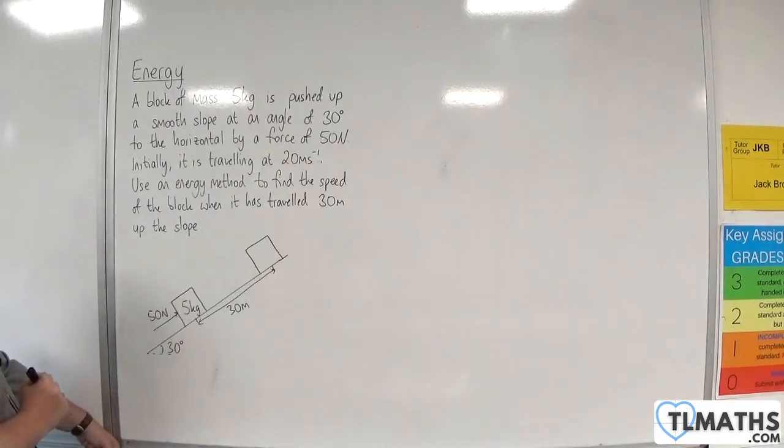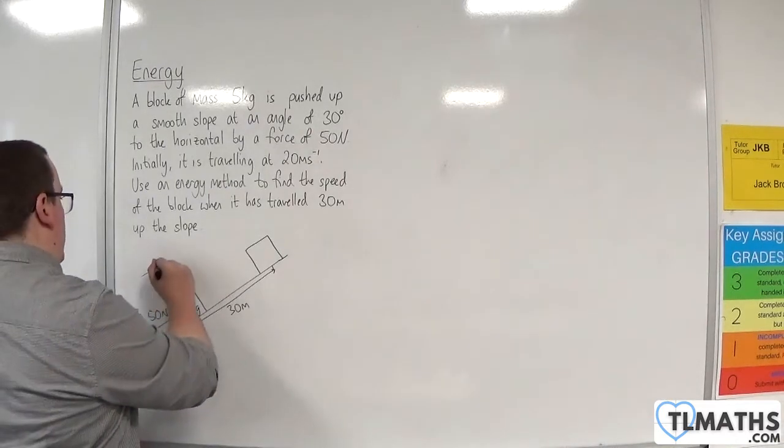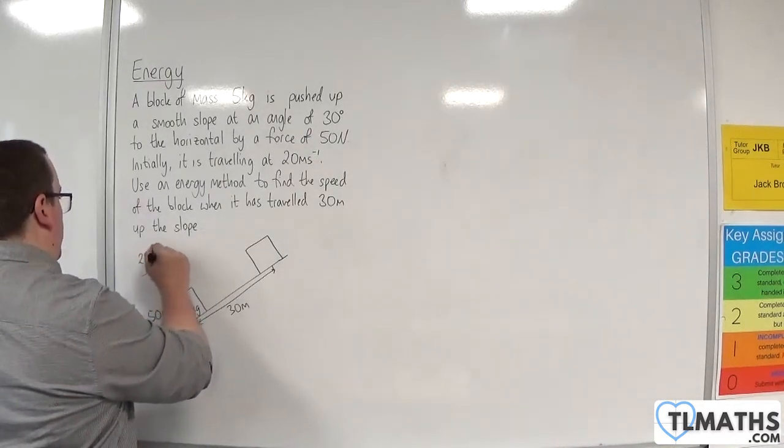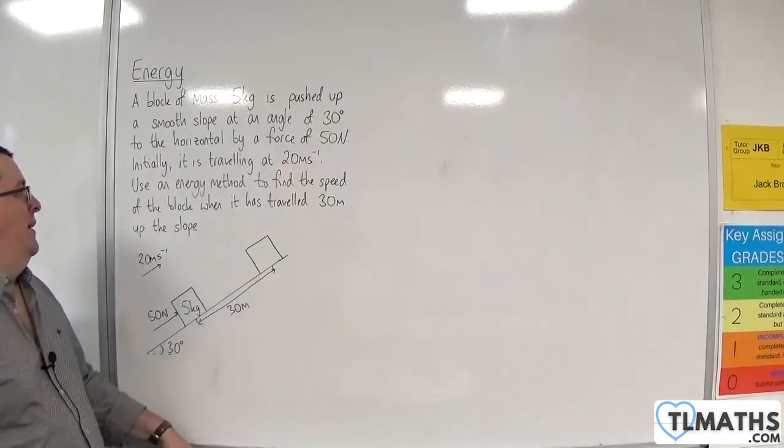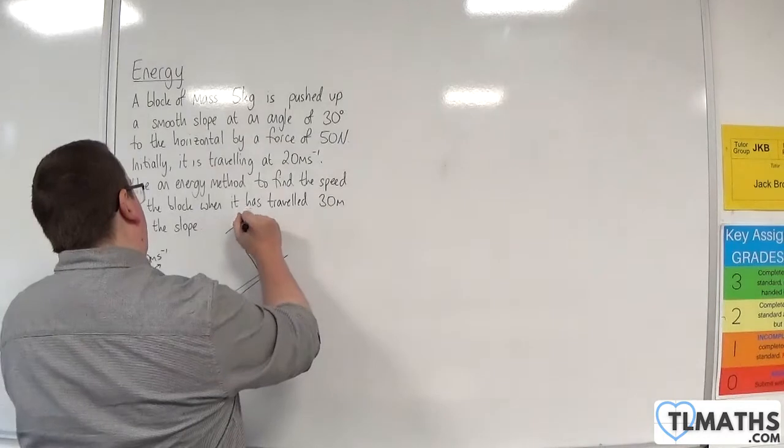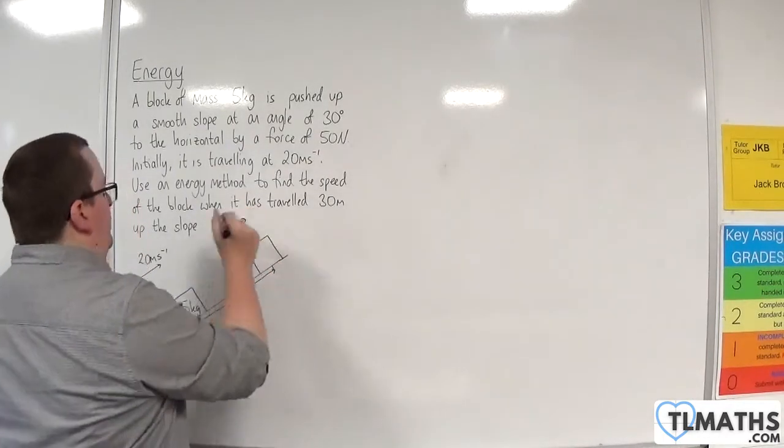Initially, it is traveling at 20 meters per second. Use an energy method to find the speed of the block when it has traveled 30 meters up the slope. So we're interested in the final velocity V.